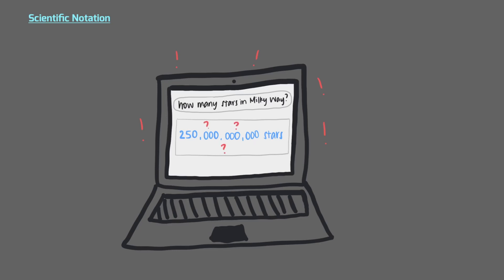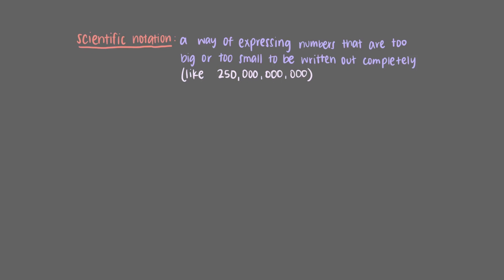Surely there's an easier way to write it. Lucky for us, there is. We can use scientific notation to write 250 billion in a simpler way. Scientific notation is a way of expressing numbers that are too big or too small to be written out completely, like 250 billion.